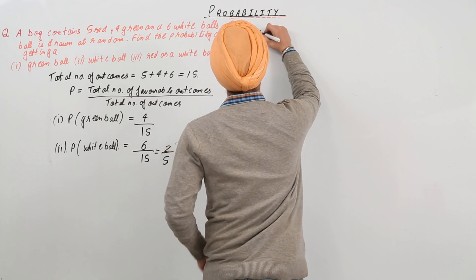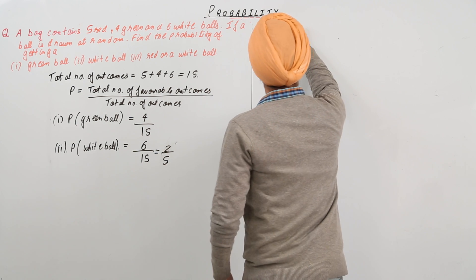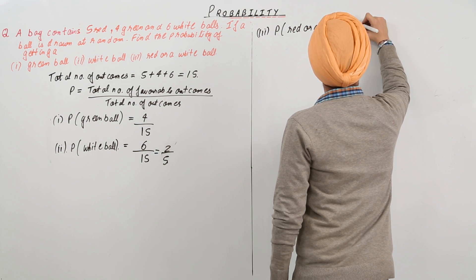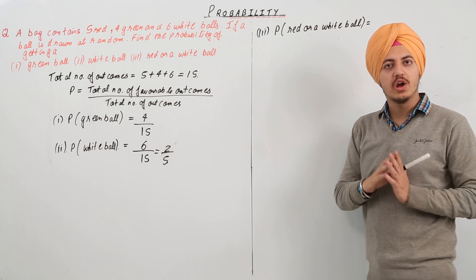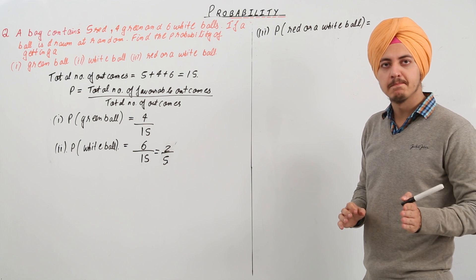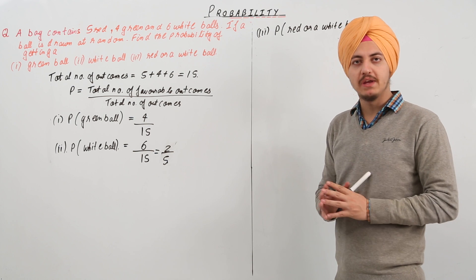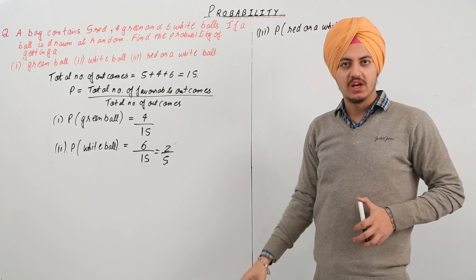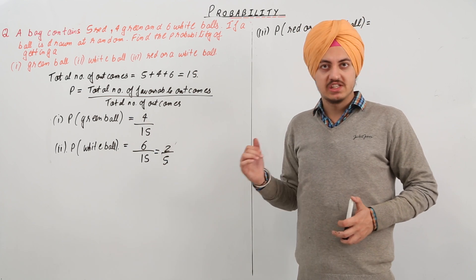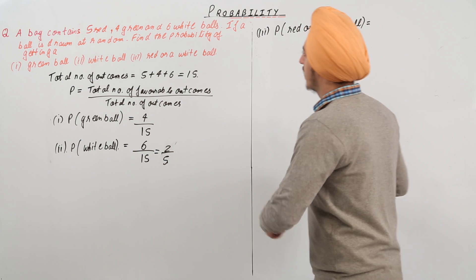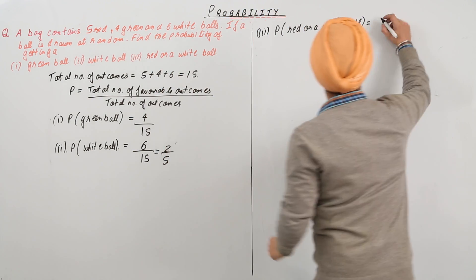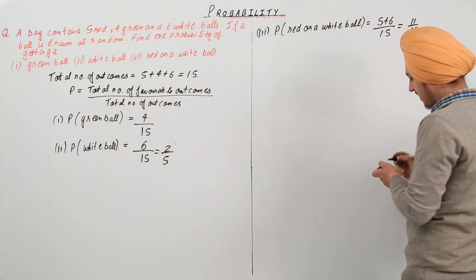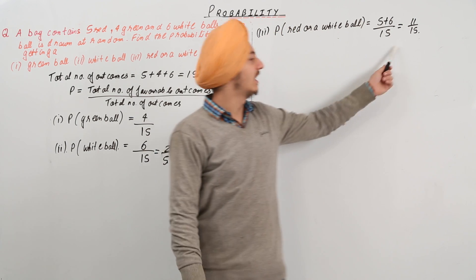The third part says find the probability of getting a red or a white ball. The number of red balls plus the number of white balls will be the total number of favorable outcomes, because we need either a red ball or a white ball. If we get a red ball, it is still favorable; if we get a white ball, it is still favorable. So the probability is 5 plus 6 upon 15, which is equal to 11 upon 15. So the probability of getting a red or a white ball is 11 upon 15.